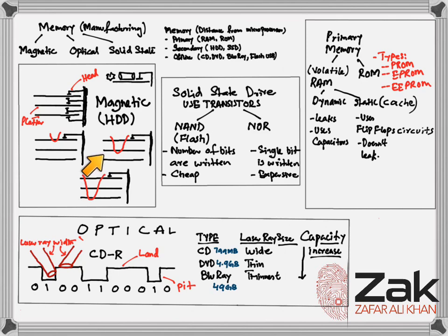Hard disk drives are still one of the most common methods used to store data on computers. Data is stored in digital format on the magnetic surfaces of disk platters. The hard disk drive will have a number of platters which can spin at about 7,000 times a second. A number of read-write heads can access all the data surfaces on the hard disk. Normally, each platter will have two surfaces which can be used to store data. These read-write heads can move very quickly — typically from the center of the disk to the edge and back again 50 times a second.